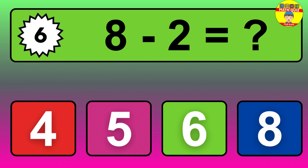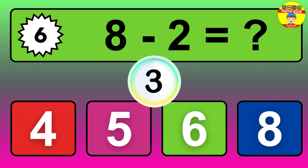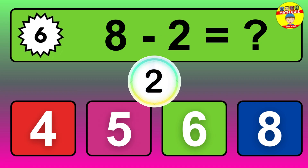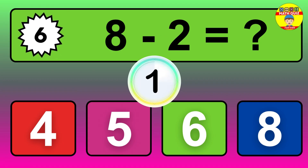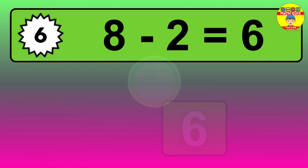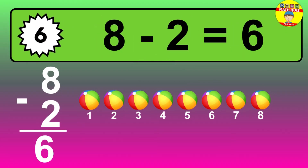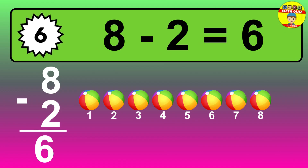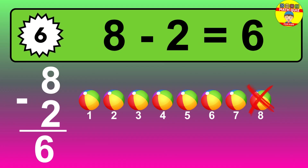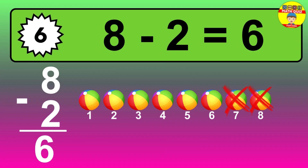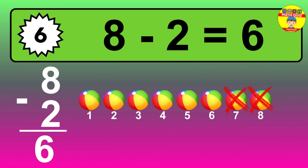Question 6. 8 minus 2 equals what? The answer is 8 minus 2 is 6. Let's count it: 1, 2, 3, 4, 5, 6.